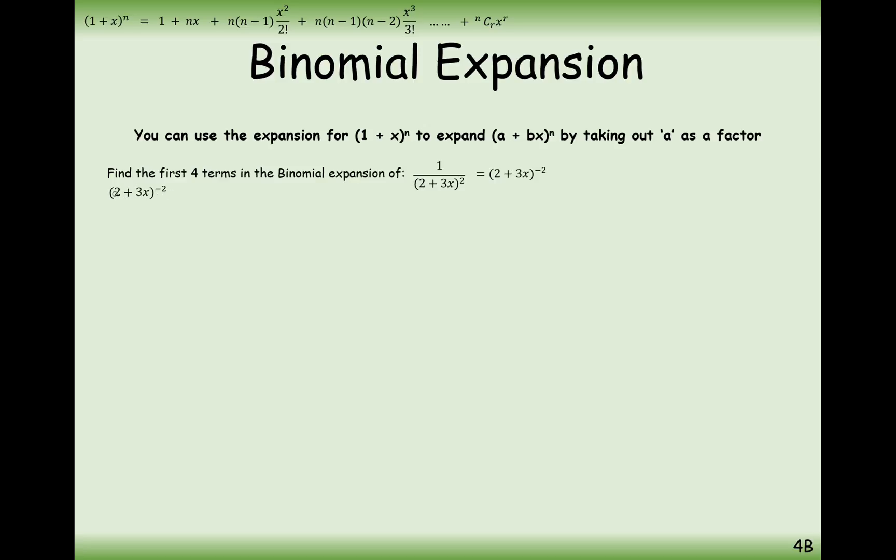We've got 2 plus 3x to the minus 2. We're going to pull the 2 as a factor out of the brackets. But the minus 2 as a power is also going to come with it. So pulling a 2 out as a factor, we have to half everything inside the brackets. It's going to be 2 to the power of minus 2 that's come out, and 1 plus 3x over 2 all to the power of minus 2.